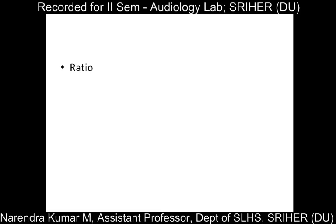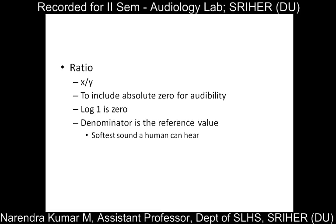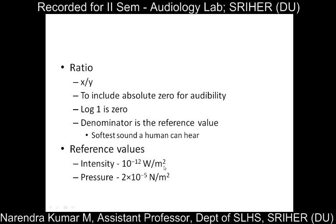A ratio is used to attain that 0. A ratio has a numerator and denominator. To include absolute 0 for audibility we use this ratio scale: log of 1 is 0, and when numerator and denominator are the same the ratio is 1, so log(1) = 0. The denominator is always the reference value — the softest sound a human can hear. The reference value for intensity is 10 to the power minus 12 watt per meter square, and for pressure it is 20 micropascals (2 × 10⁻⁵ newton per meter square).